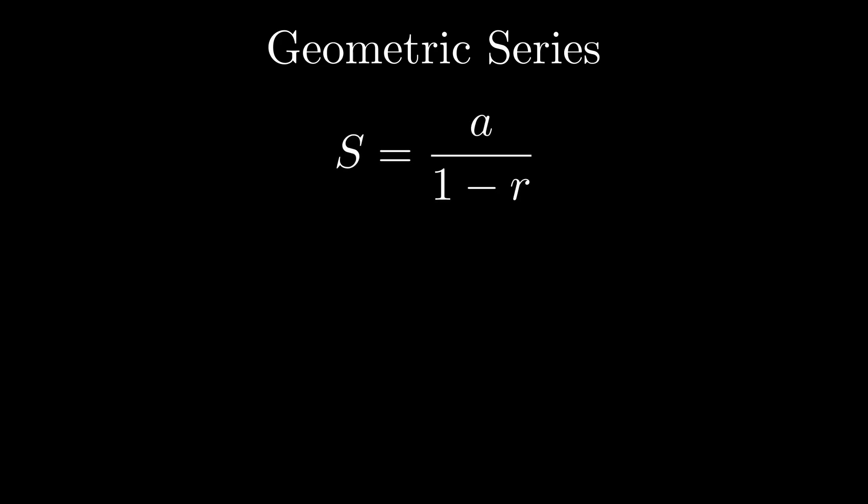Taking the example from earlier, let's plug in 1 half, which is our first term, and essentially you can just pretty much guess that if you plug in a equals 1 half and r equals 1 half, you will get the original sum of 1, which is indeed true. You do get the entire square back.